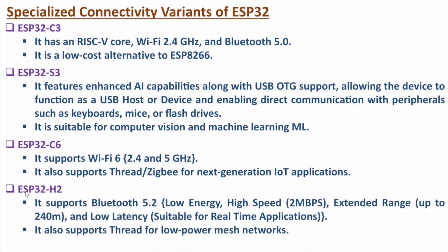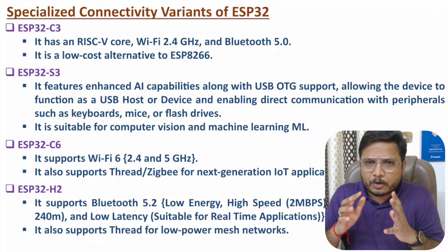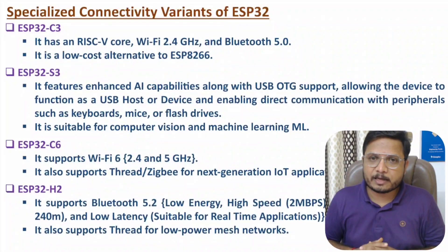The next variant is ESP32 H2. It supports Bluetooth 5.2, which is advanced Bluetooth consuming low energy. It has high speed up to 2 Mbps, extended range up to 240 meters, and lower latency which makes it suitable for real time applications. It also supports Thread for low power mesh networks. So based on different categories of connectivity, one can prefer any variant of ESP32. Before you deploy any application, you should observe the features of available variants.